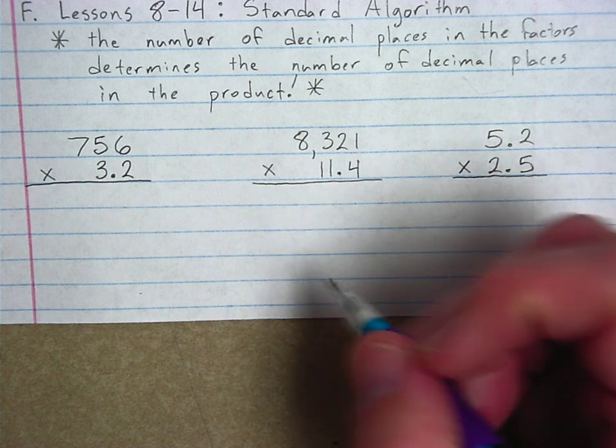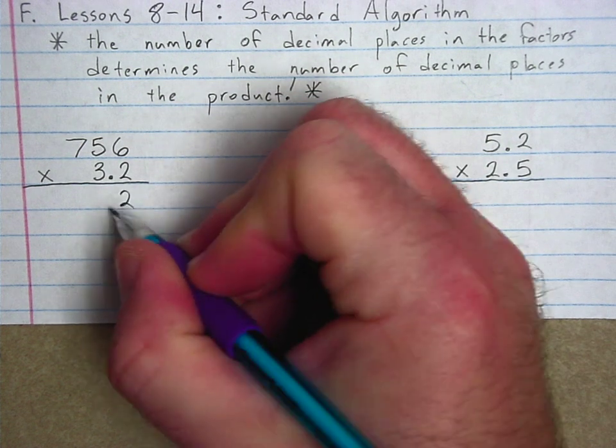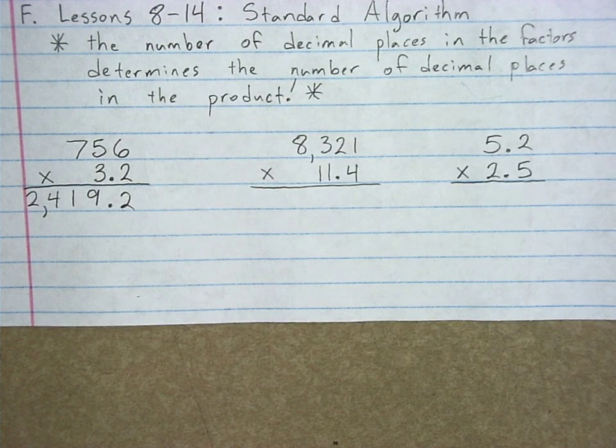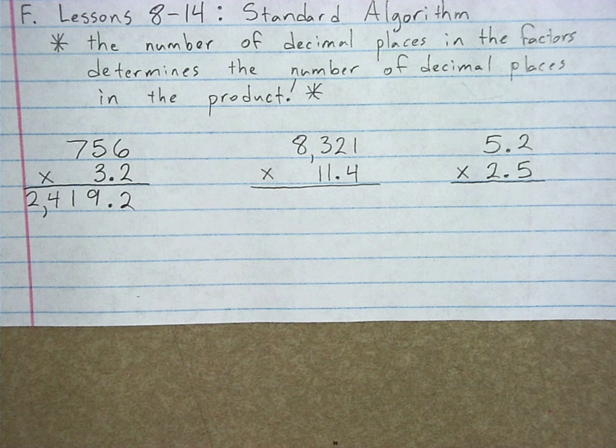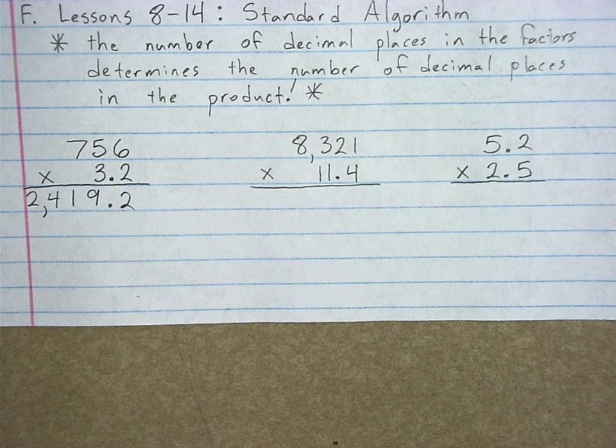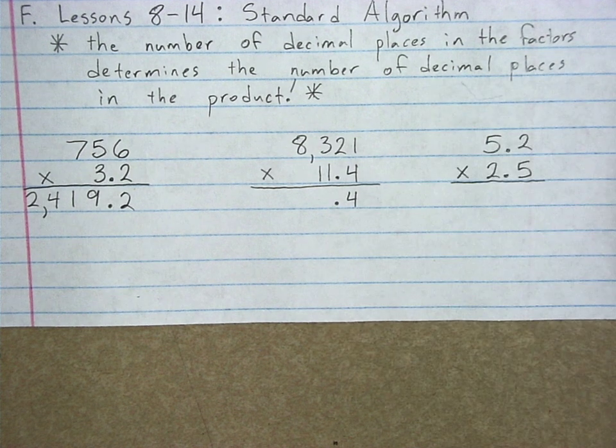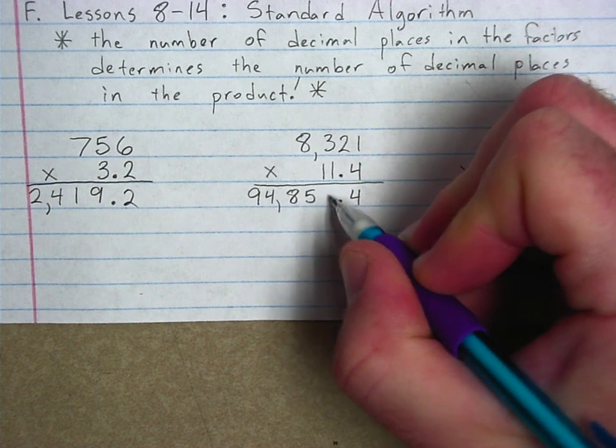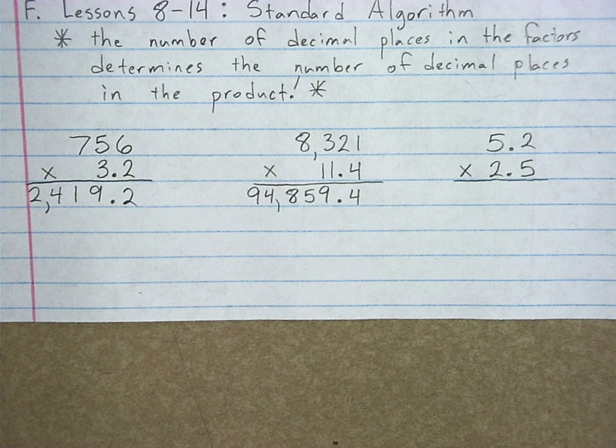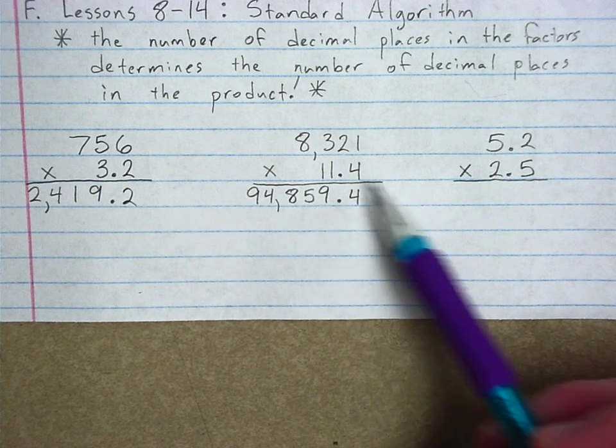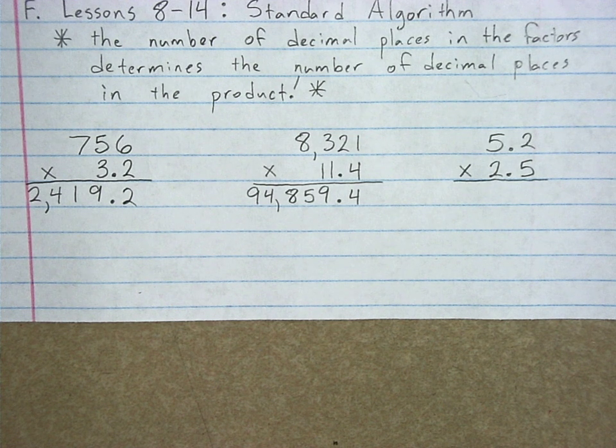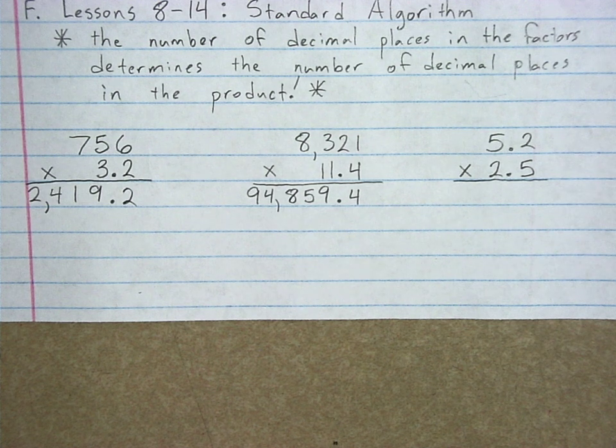All right, hopefully you solved that out on your own. This first one would be 2,419 and two tenths, just as we predicted, only one decimal place. This next one is kind of a monster. 94,859 and four tenths. Once again, super long but only one decimal place. The last one kind of silly because it's a little short. Now this one actually I'm going to work out.